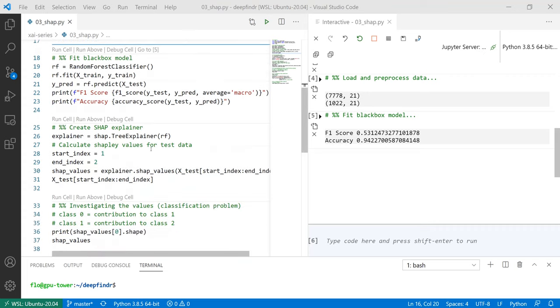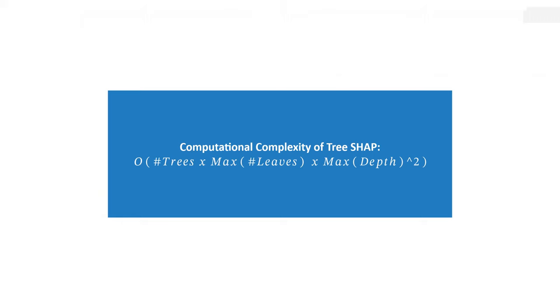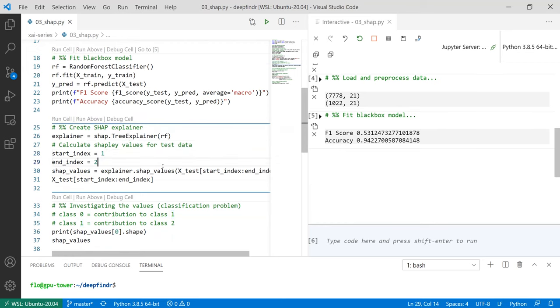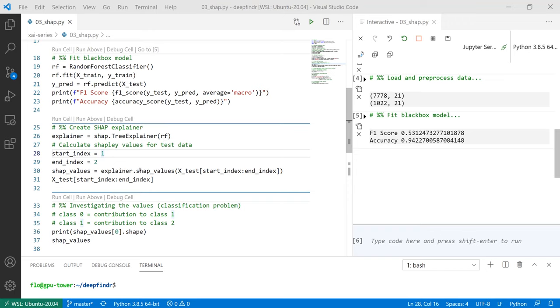So if we move on we can now instantiate this tree explainer and we can use this tree Shap which I explained previously which achieves polynomial time complexity when calculating the Shapley values so not exponential anymore. And for tree-based models like random forest which is an ensemble of decision trees we can use those models to speed up the calculation.